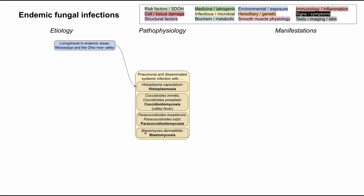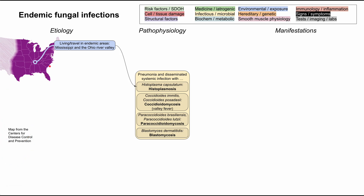Let's start with the etiology for each of these — they're all associated with a specific endemic area. Histoplasmosis is associated with the Mississippi and Ohio River Valleys, making up much of the eastern United States. A key association for test questions is that the patient has been exposed to bird or bat droppings while doing an activity like spelunking or cave exploration. That's where this fungus is found.